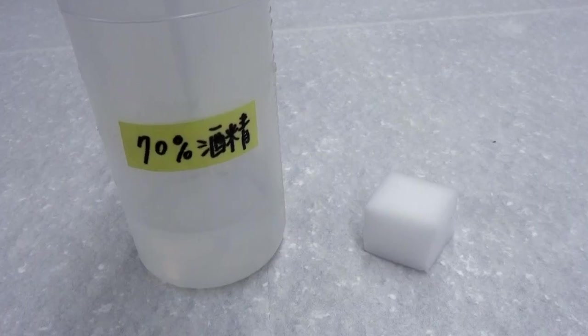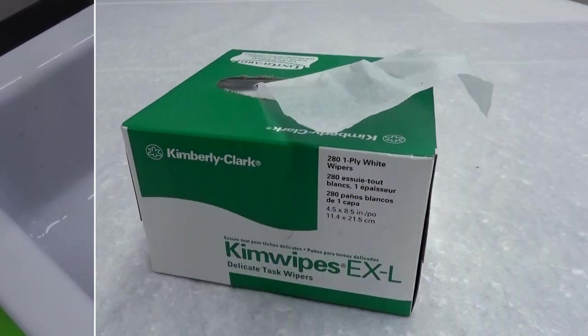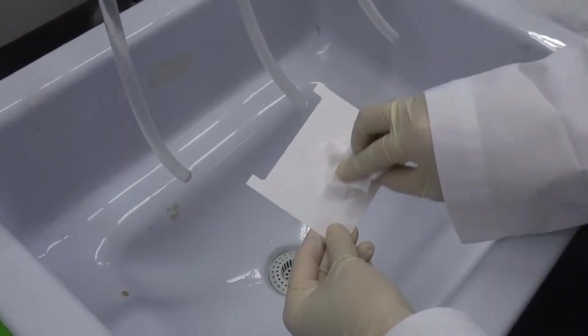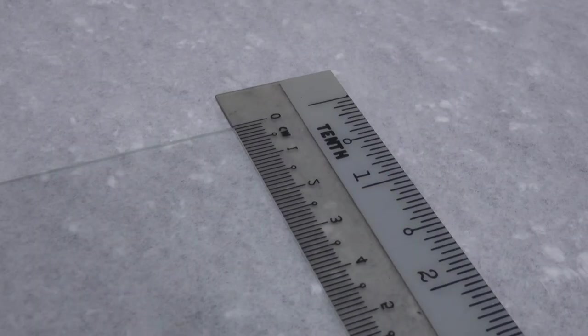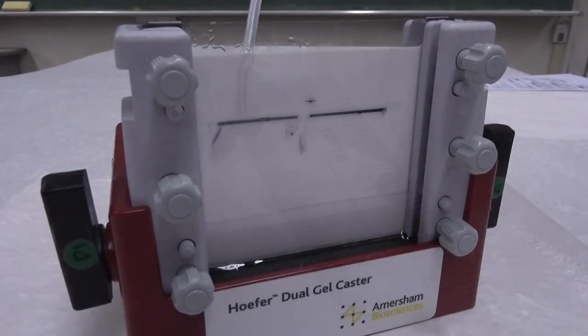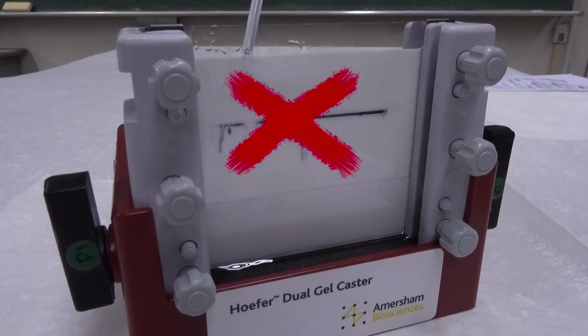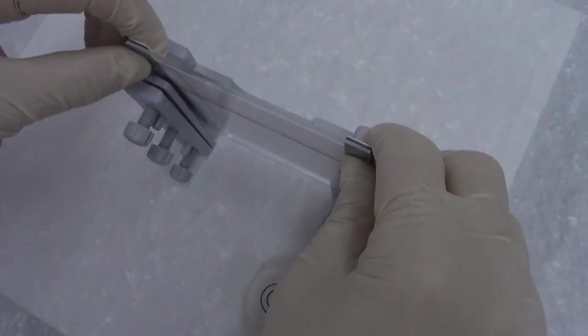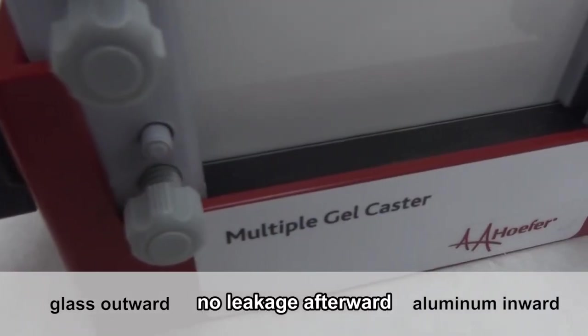Clean one glass plate, one ceramic plate, and two spacers with sponge and ethanol. Wipe with Kimwipes and allow them to dry completely on a rack. Mark a straight line on the glass plate about 3 cm from its upper edge. This line can be used as a reference for the level of separating gel. Make sure this side is facing outward. Otherwise, the mark will be washed off by the gel solution. Pithy formula: Glass outward, aluminum inward, and no leakage afterward.